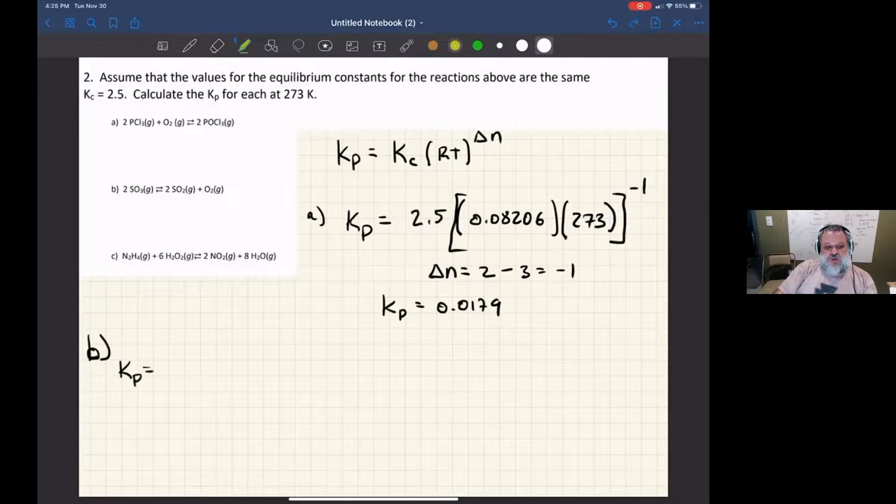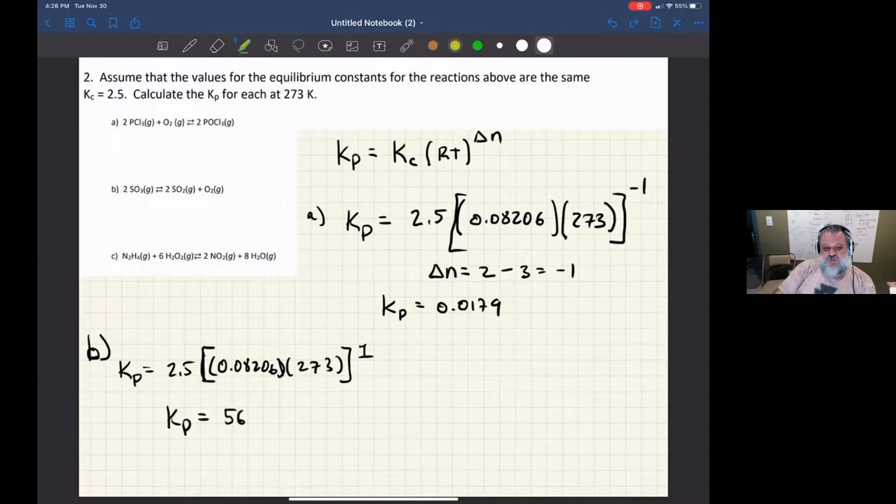Let's do B. All right, I get Kp equals 2.5 times 0.08206 times 273 raised to the power of 1. I get the same thing as before. In this case, it's 3 minus 2 instead of 2 minus 3. So it's positive 1. And that makes the equilibrium constant in terms of pressure 56.0.